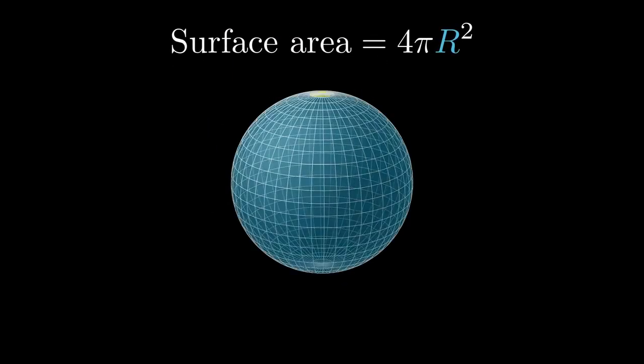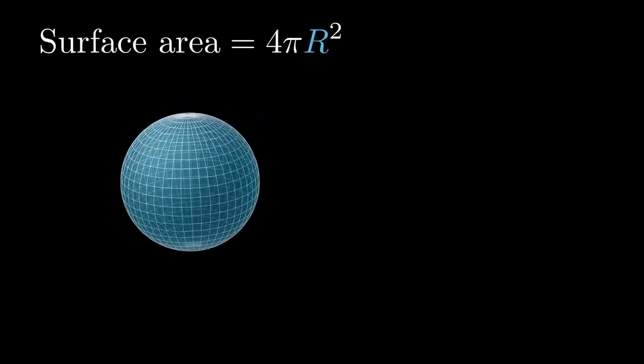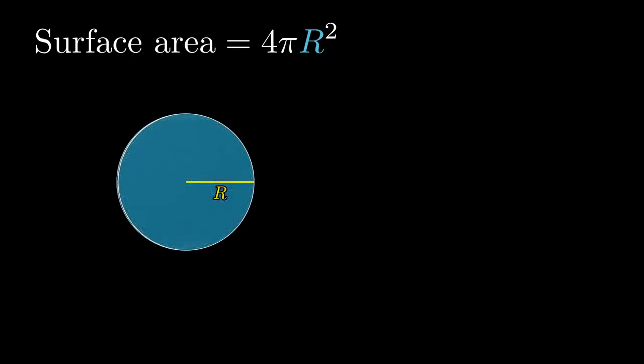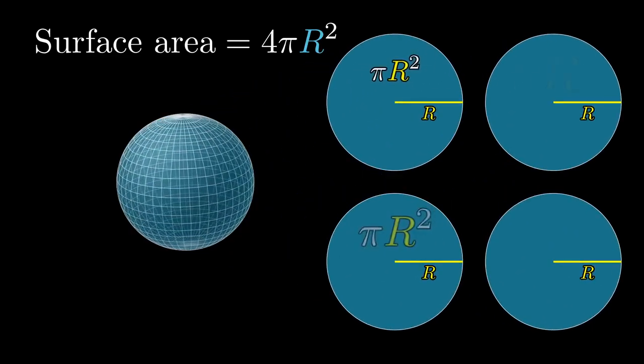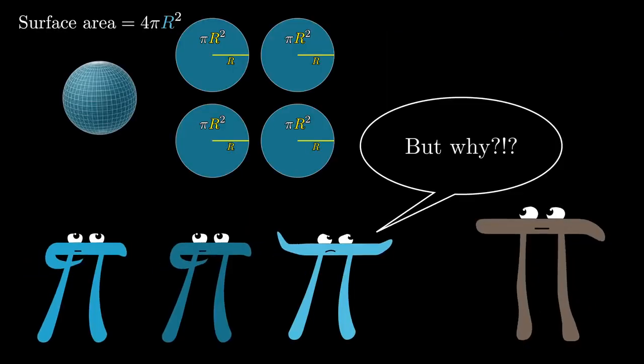Some of you may have seen in school that the surface area of a sphere is 4πr², a suspiciously suggestive formula given that it's a clean multiple of the more popular πr², the area of a circle with the same radius. But have you ever wondered why this is true?